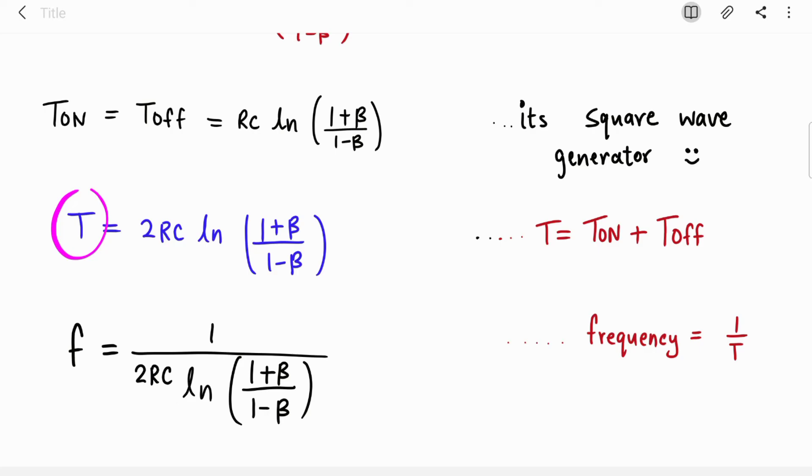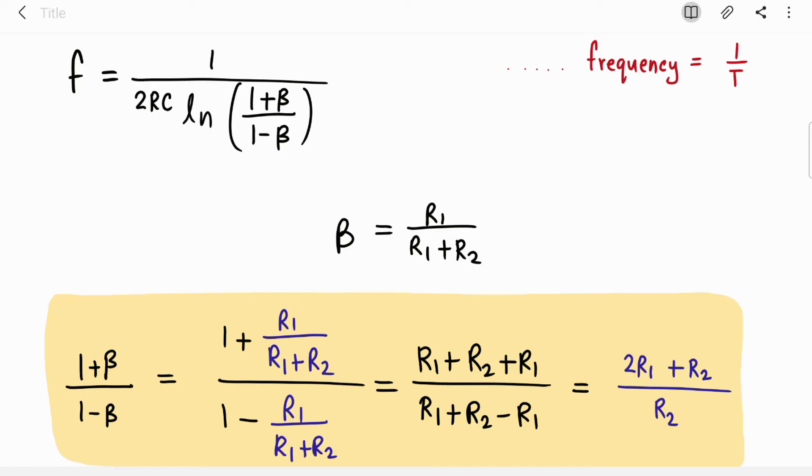Now we have got time period, we need frequency, so just take inverse of it. Now we have to get rid of this beta. We know that beta is R1 upon R1 plus R2. So I just substituted beta values. In the numerator it becomes 2 R1 plus R2. R1 gets cancelled and we get only R2 in the denominator. We can replace this whole term by this R1 R2 combination.